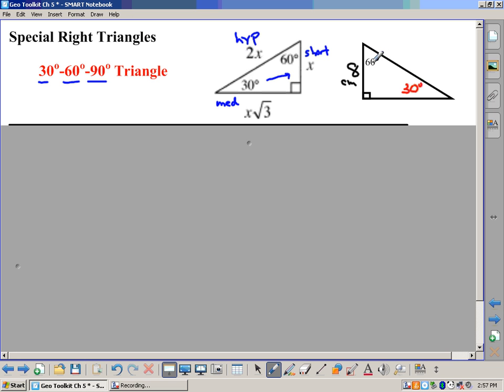You would say the hypotenuse is always twice that. Well, the hypotenuse is over here, so that would be 16 centimeters, and therefore the side opposite the 60 would be 8 times the square root of 3 centimeters long. And so that always works when you've got a 30-60-90.